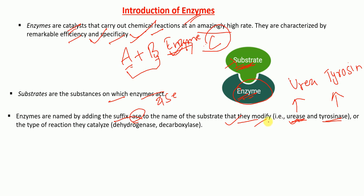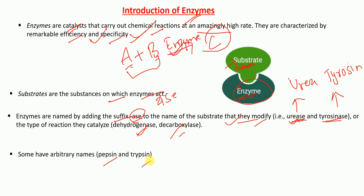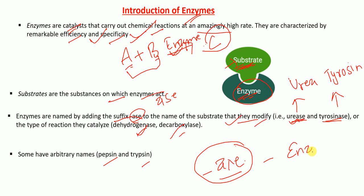Enzymes can also be named by the type of reaction they catalyze. For example, dehydrogenases remove hydrogen, and decarboxylases remove a carboxyl group. Some enzymes have arbitrary names, for example pepsin and trypsin. The trick is: whenever you see '-ase' at the end of a word, that compound is likely an enzyme.